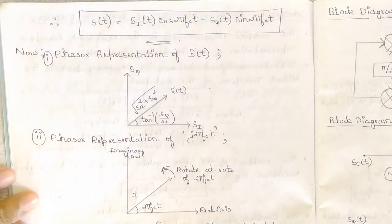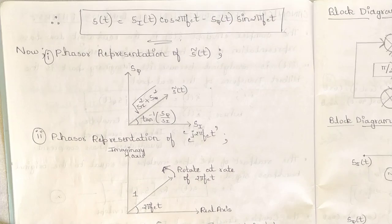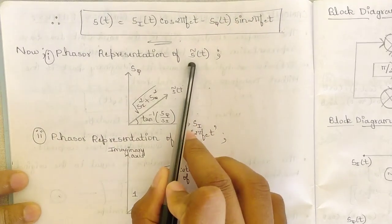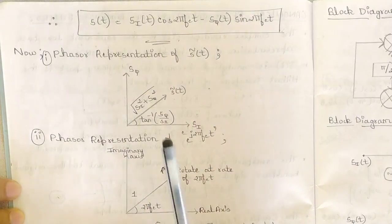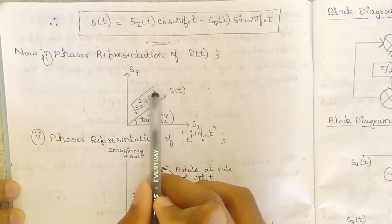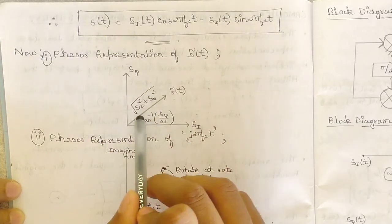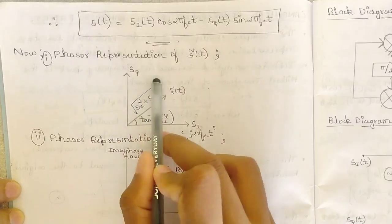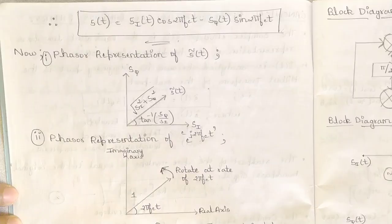Now consider the phasor representation of the two components for the complex envelope and the exponential component. For the complex envelope, it is plotted with s_q and s_i axes; the magnitude is √(s_i² + s_q²) and the phase is tan⁻¹(s_q / s_i).